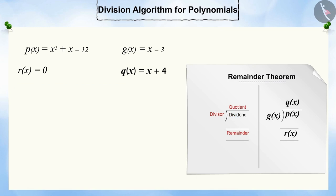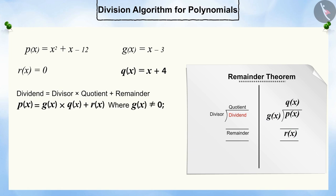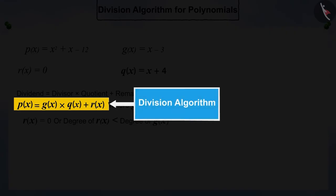Here, the part on the right can also be written this way. This division process is similar to Euclid's division algorithm, according to which p(x) will be equal to g(x) times q(x) plus r(x), where g(x) will not be equal to 0 and r(x) will be 0 or the degree of r(x) will be less than the degree of g(x). This conclusion is called the division algorithm for polynomials.